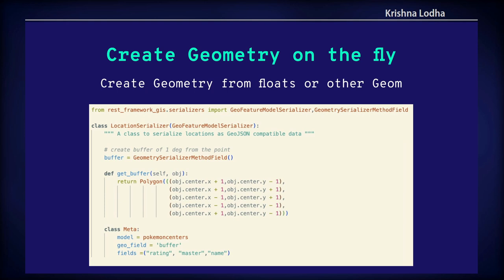If you don't have geometry in your model, that's not a problem — you can also create geometry on the fly. To do that we use GeometrySerializerMethodField. For example, here I've created a buffer where instead of sending the point I want to send the buffer. I create a get_buffer function that returns a polygon with a random extent of plus or minus one degree. So if you have lat and long as column names that's fine — you can create geometry on the fly and then use it.